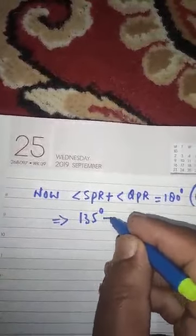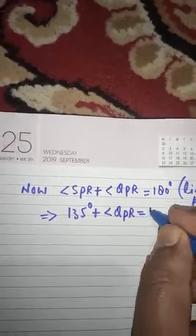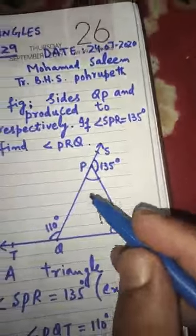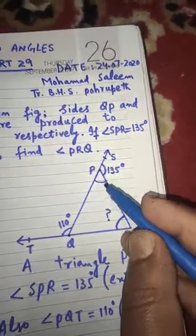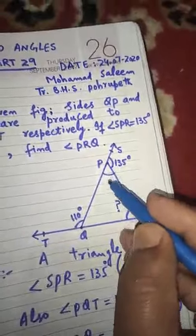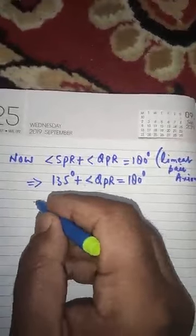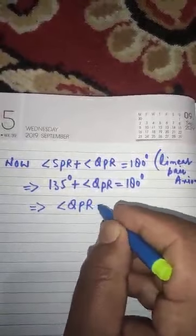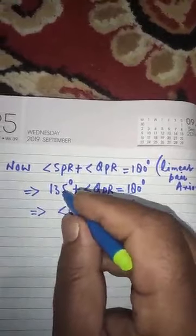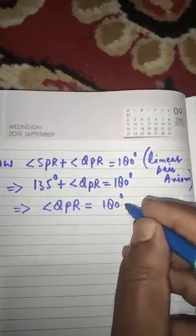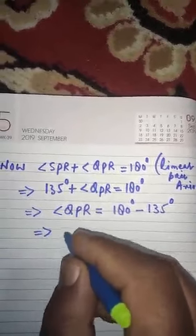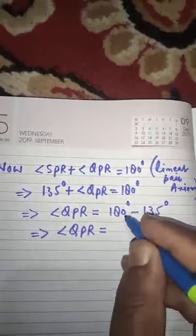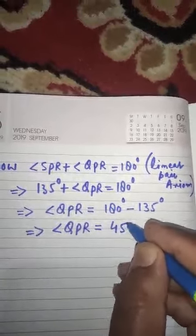Since we know angle SPR is 135 degrees, we get: 135 degrees plus angle QPR equals 180 degrees. Transposing 135 to the right-hand side gives us angle QPR equals 180 minus 135, which equals 45 degrees.